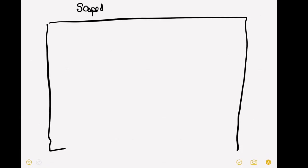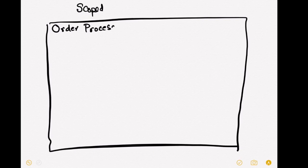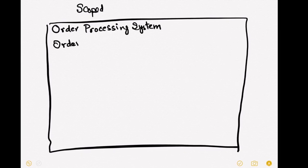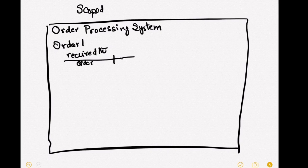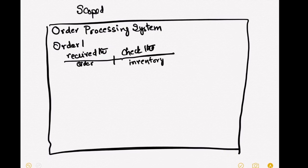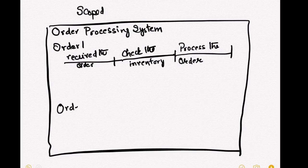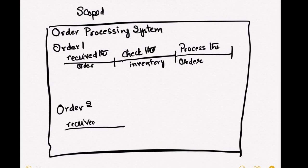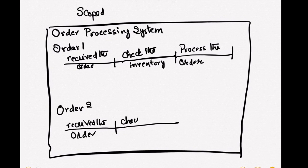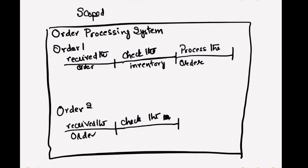Now let's see what is the scoped one. Let's draw the same system. We receive the order, check the inventory, we process the order. And we are getting two orders. In this system, we have two requests: order one request and order two request.